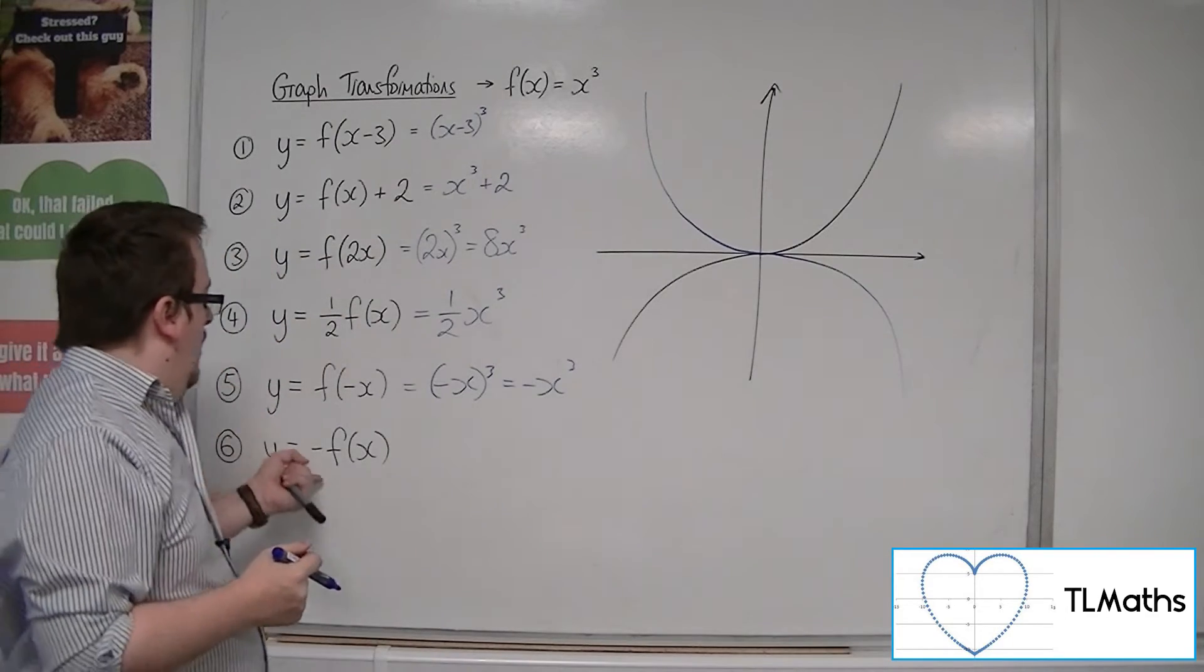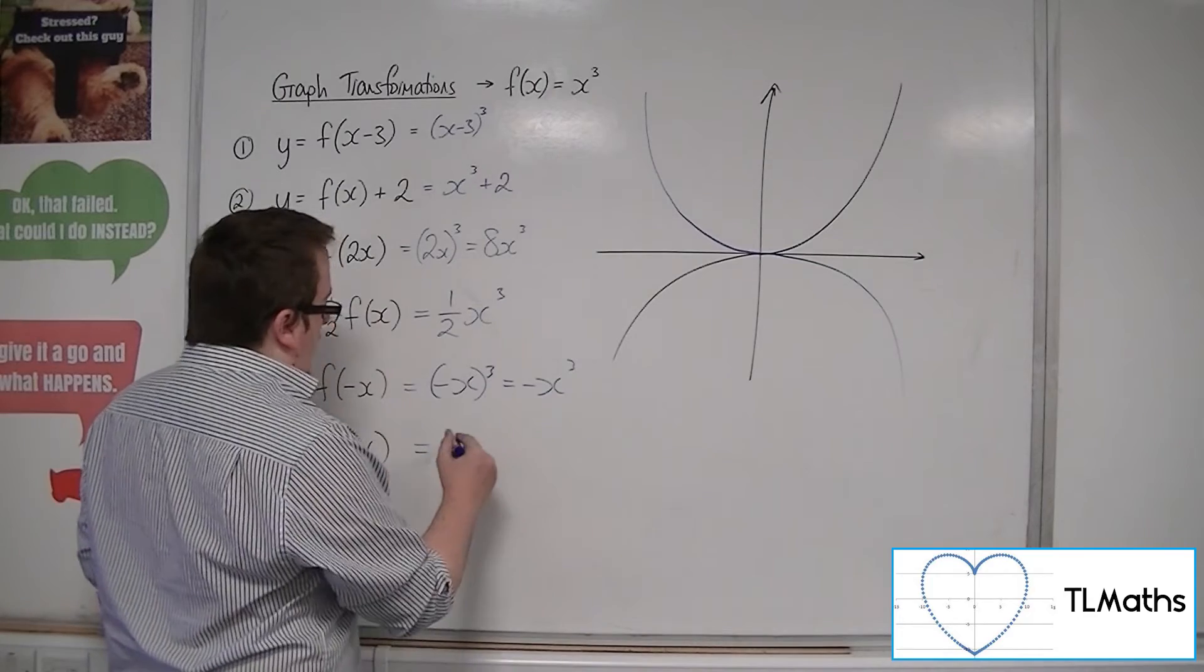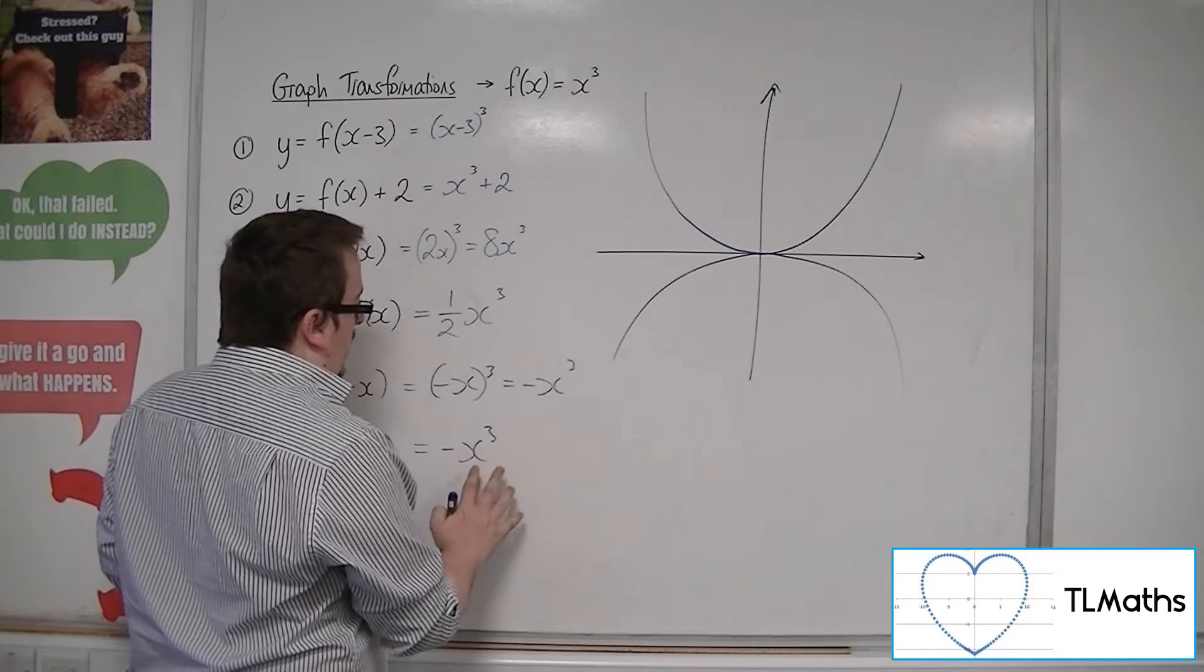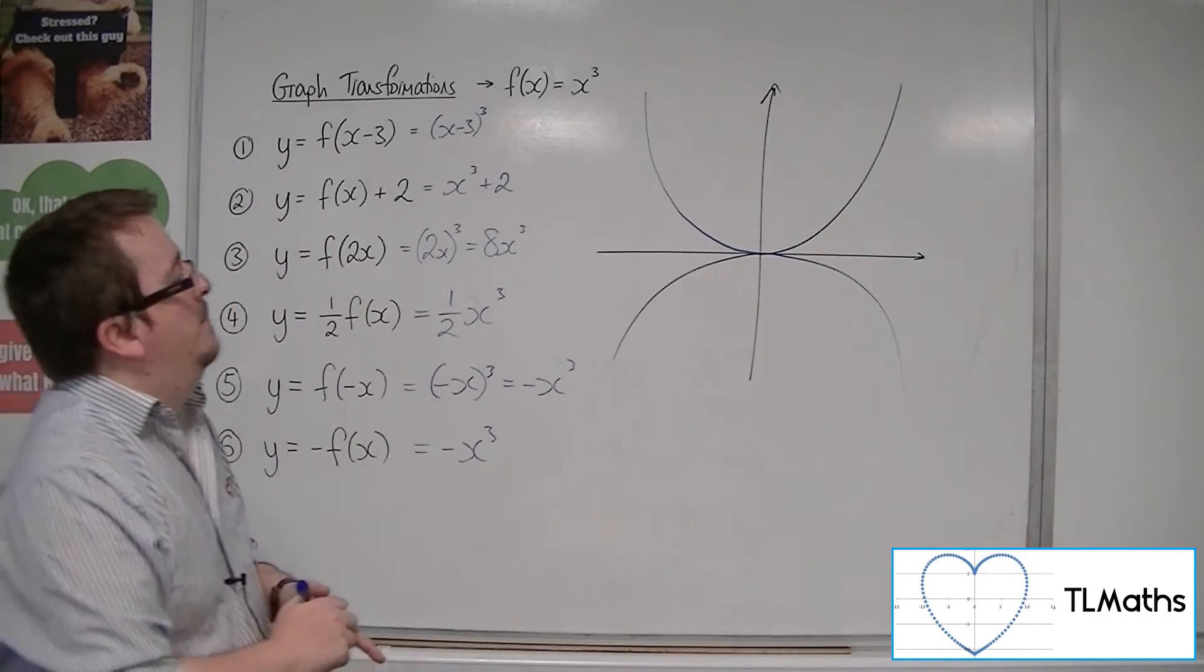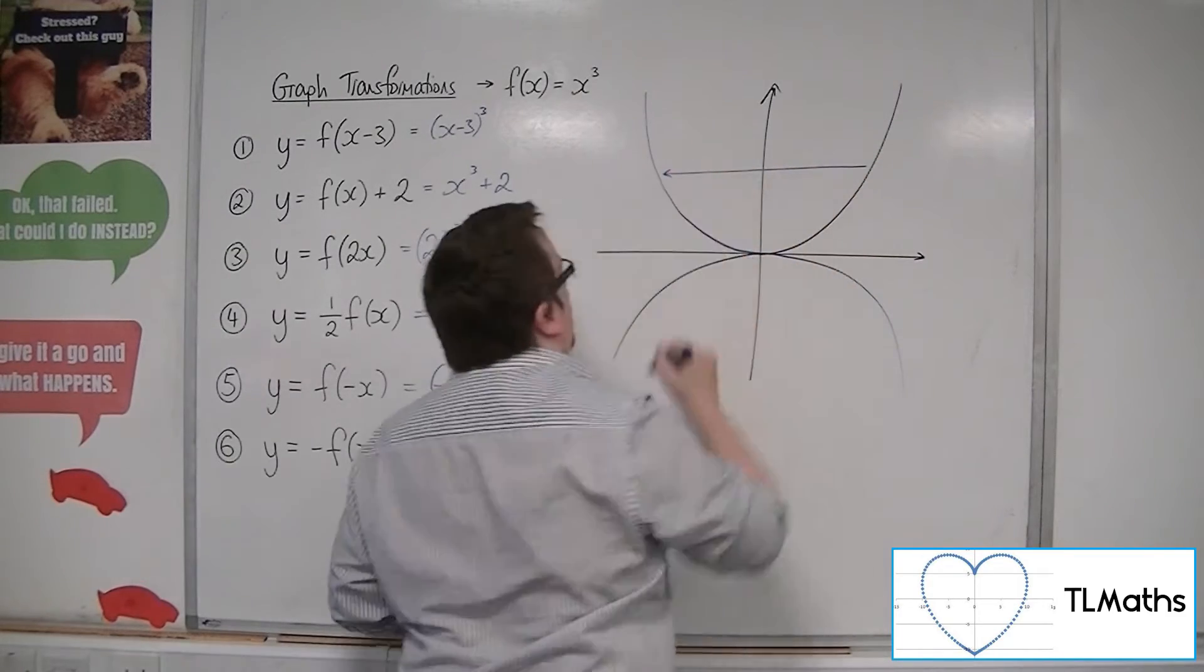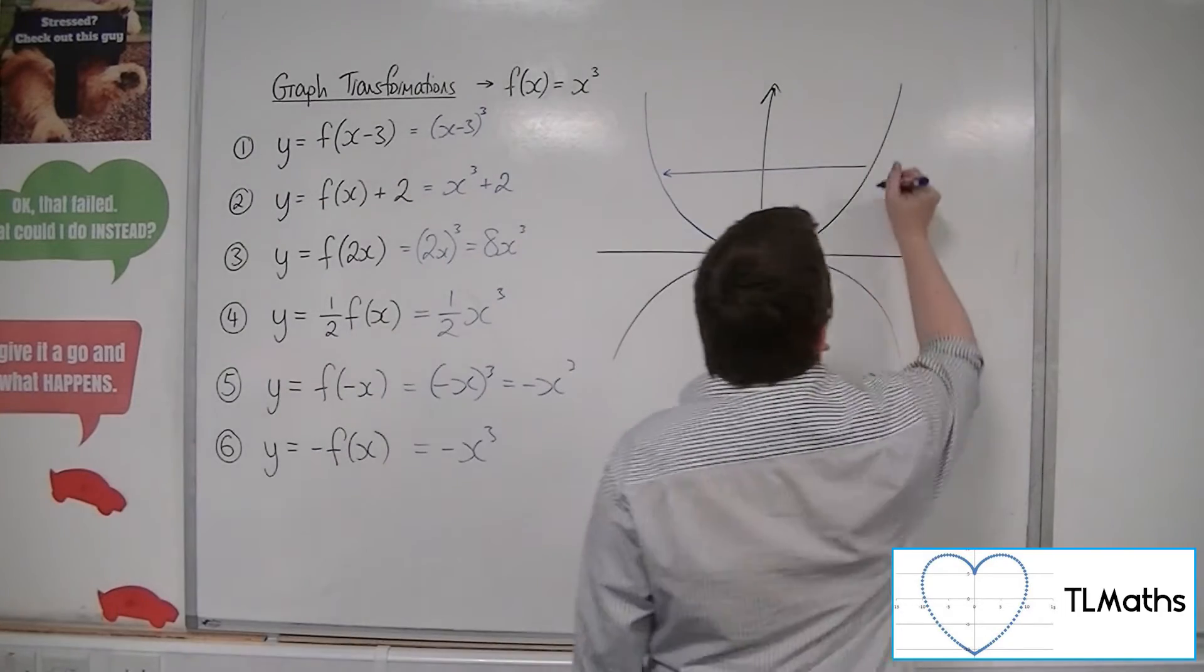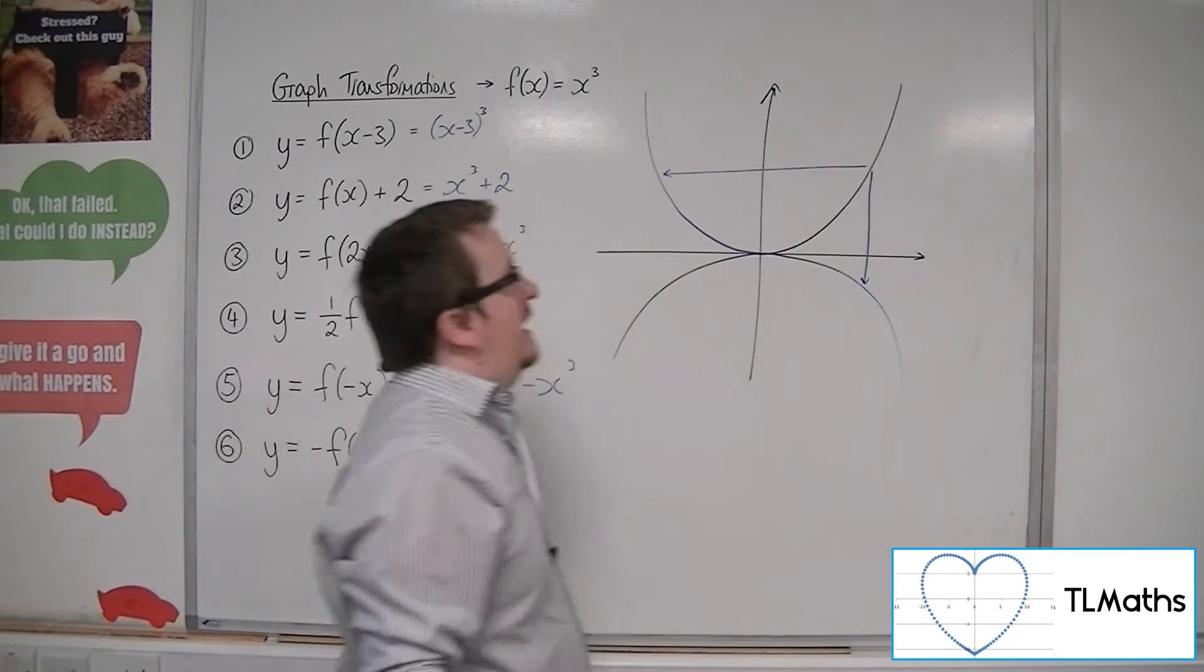Now, y equals minus f of x is minus x cubed. And so these two curves will be precisely the same. Because it's the same thing to say that I'm reflecting this curve in the y-axis, as it is to say that I'm reflecting this curve in the x-axis.